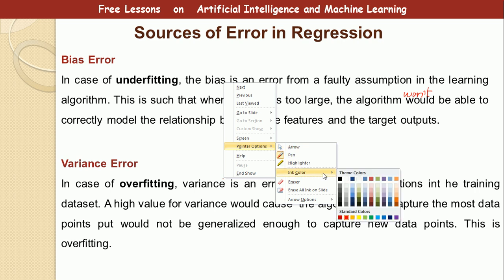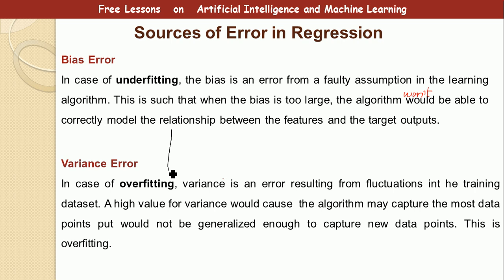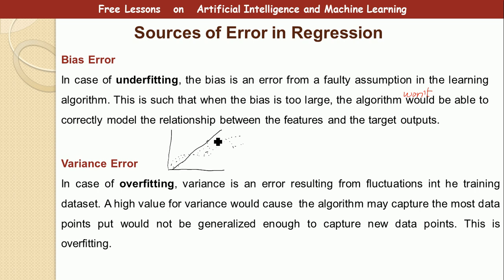Let me illustrate this. Say we have data points arranged in a certain way. If the bias is too large, the algorithm won't be able to model the relationship — we end up with something like this where the data points are not actually captured. This is called underfitting, where the bias is too large and the algorithm does not model the relationship correctly.